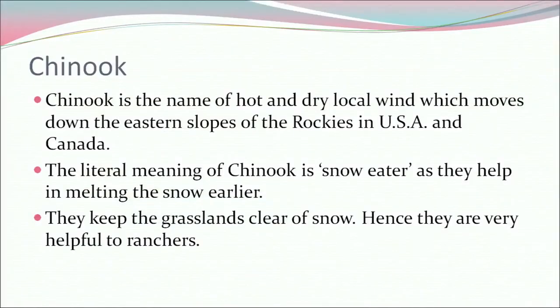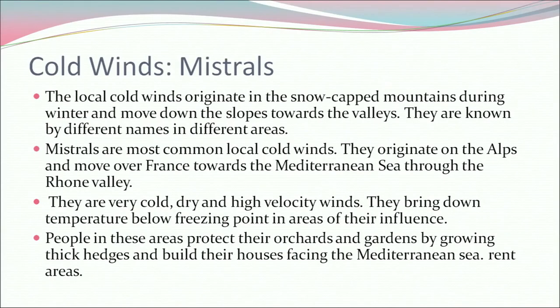What is the Chinook? Chinook is the name of a hot and dry local wind which moves down the eastern slope of the Rockies in USA and Canada. The literal meaning of Chinook is 'snow eater' as they help in melting the snow earlier. They keep the grassland clear of snow, hence they are very helpful to ranchers. Cold winds — Mistrals: local cold winds originate in the snow-capped mountains during winter and move down the slope towards the valley. They are known by different names in different areas. Mistrals are the most common local cold winds. They originate on the Alps and move over France towards the Mediterranean Sea through the Rhone Valley. They are very cold, dry and high velocity winds. They break down temperature below freezing point in areas of their influence. People in these areas protect their orchards and vineyards by growing thick hedges and build their houses facing the Mediterranean Sea.